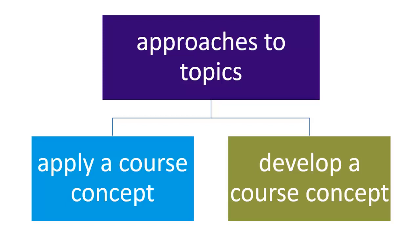Topics often involve one of two approaches. You can pick a topic you covered in class and want to look at in more detail on one smaller aspect, like animal learning behavior. Or, you can take a concept you learned about in class and apply it to something else. For example, if you learned about factors influencing people's decision to exercise, you might apply those ideas to dieting.